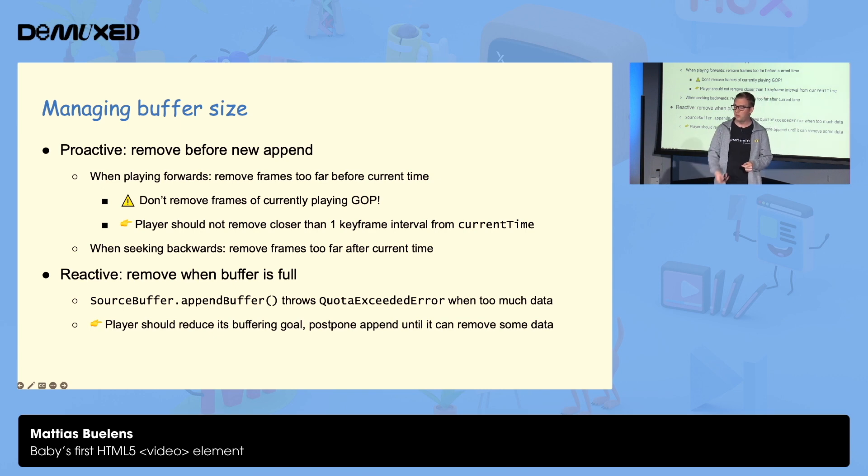When you're seeking backwards, you can also remove frames that are now too far ahead of current time. But sometimes that's not enough. Sometimes the source buffer might reach its limit earlier than that, and you have to react to that. It'll throw a quota exceeded error at you, so your player should be able to handle that, reduce its buffering goal, and then keep less buffer after current time. It should also postpone the next append until it can actually remove some data that it no longer needs, and then retry the append again.